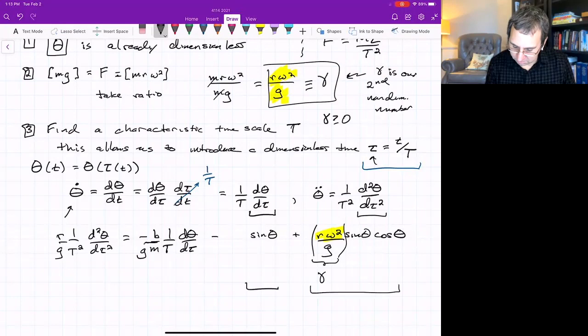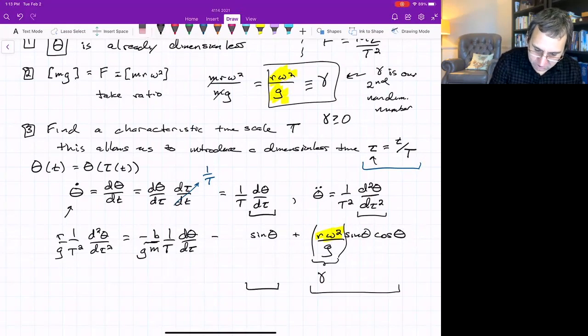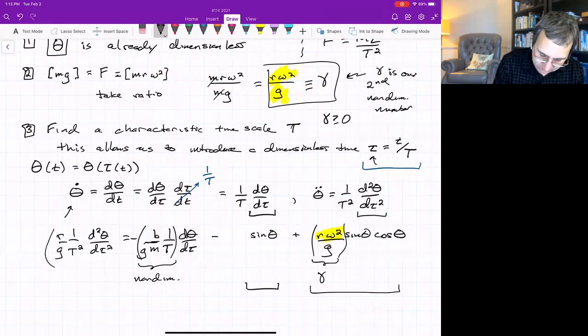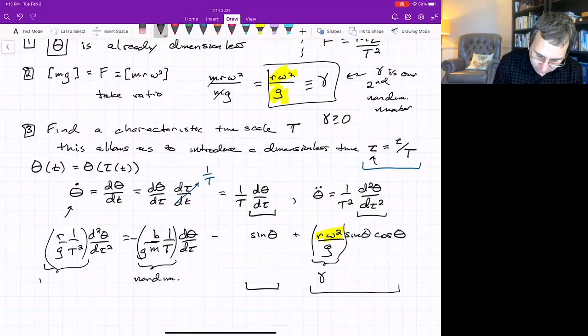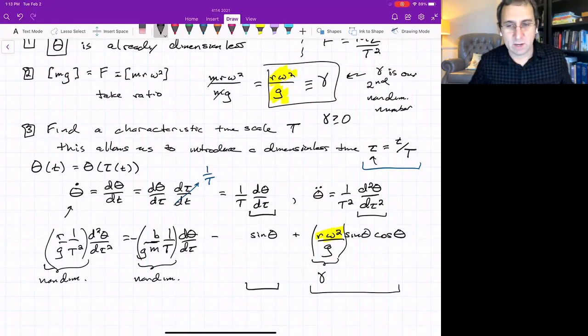Everything is non-dimensional. This is a non-dimensional term. This is a non-dimensional term. This whole thing is non-dimensional. And because d theta d tau is non-dimensional, this minus sign. We've got that this is non-dimensional. And so is this.